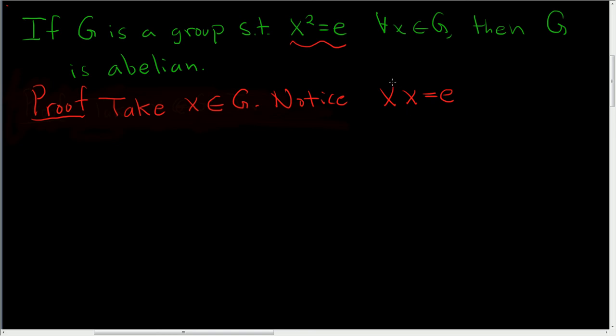This is pretty much the definition of inverse. If you have x times y equals y times x equals e, then y is the inverse of x. Well, we have x times x equals x times x equals e, so x is x inverse.